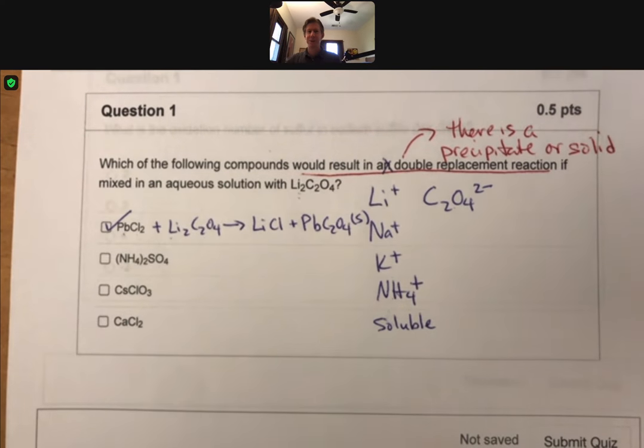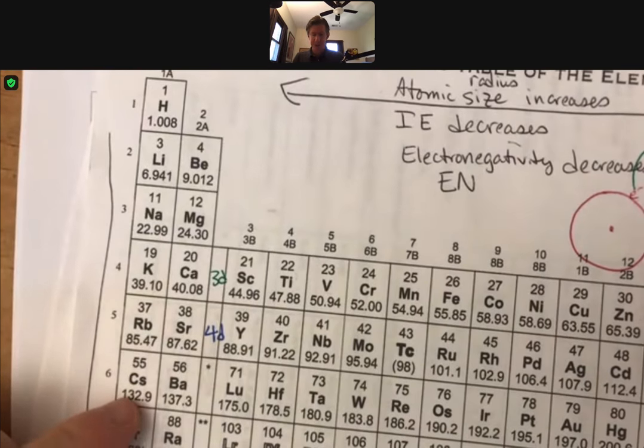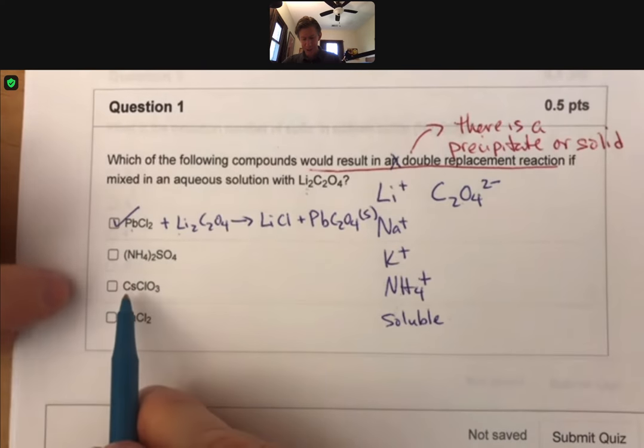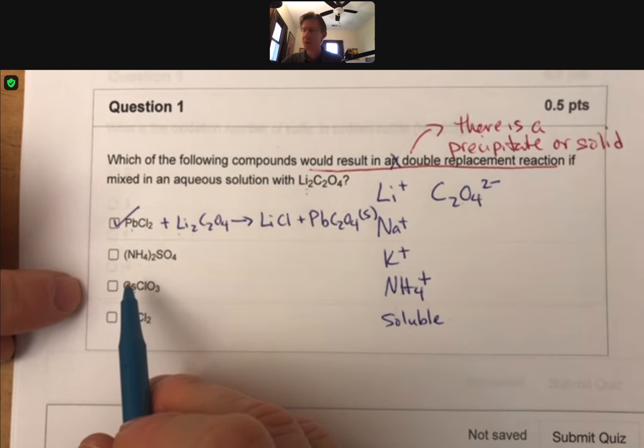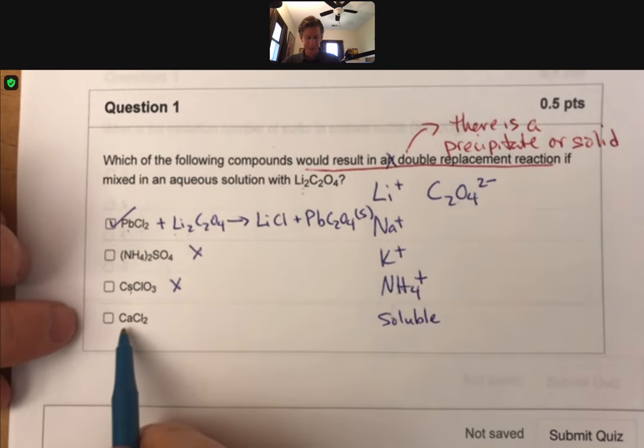Cesium - I think I forgot to put cesium on my list of group ones here. There is cesium, it is in group one. If you have something with cesium and something with lithium, they will always be aqueous or soluble. There will never be a precipitate.